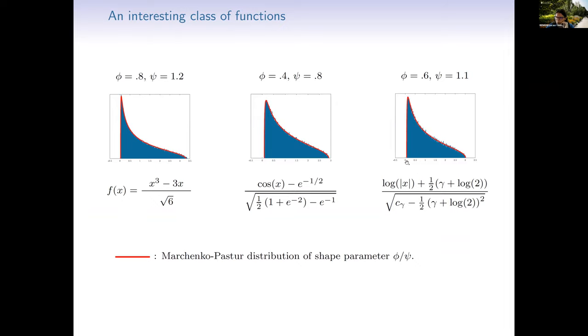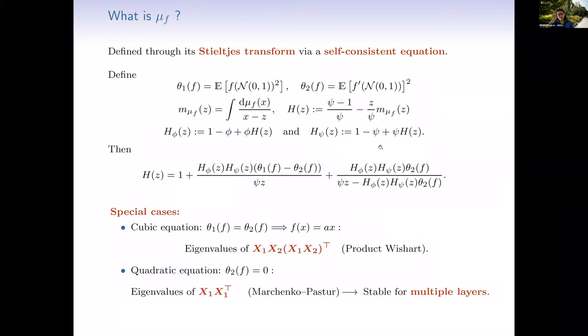Something interesting happens with absolute value: if you take W, x random and apply the absolute value to every entry, and look at the sample covariance matrix, you recover the Marchenko-Pastur distribution. It's not just the absolute value — there's a whole class of functions that, even if they look more complicated, still give Marchenko-Pastur. For example, odd functions like 3x, cosine, log|·| all give Marchenko-Pastur distribution for a certain parameter.